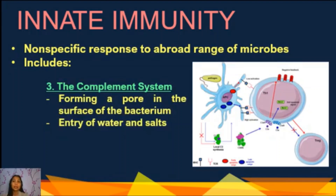The complement system is a group of about 20 plasma proteins. The word 'complement' refers to how it enhances or complements our immunity. The complement proteins help to destroy pathogens in our body. When activated, some trigger a chain reaction that punctures a bacterial cell membrane.